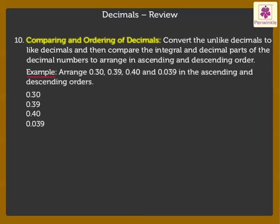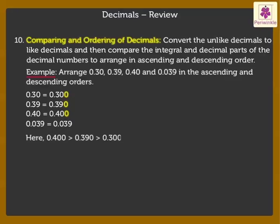Convert all the decimals to like decimals. On comparing the decimal parts we get 0.400 is greater than 0.390 is greater than 0.300 which is greater than 0.039. Thus we get the ascending order and descending orders as shown here.